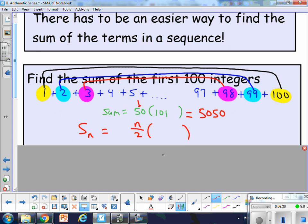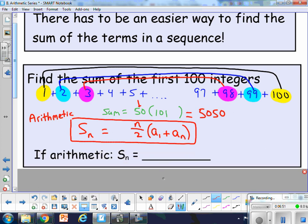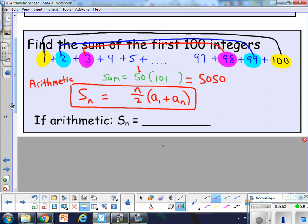And then the 101 came from adding the first term to the last term, or the nth term. So we're going to use this as our little formula to get the sum of the terms. As long as the sequence is arithmetic, this formula will get you the sum of the terms. So let's do a couple examples. That formula could just be written right down here. So that's going to be our formula.